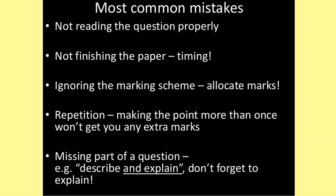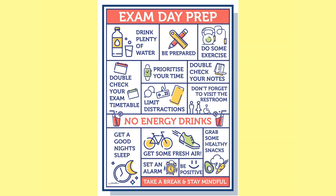Common mistakes include: not reading the question properly; not finishing the paper because you've messed up on timing; and ignoring the mark scheme. If it's asking for one advantage but it's two marks, you have to explain and contextualize that advantage to get both marks. Avoid repetition — you won't get extra marks for making the same point multiple times. Don't miss part of the question; if it says describe and explain, don't forget the explain part.